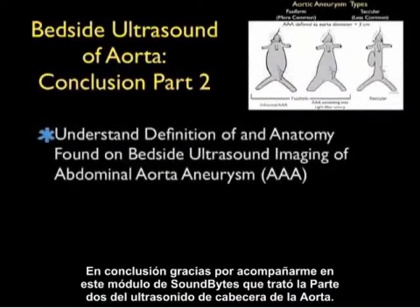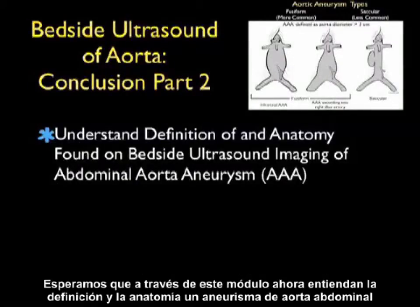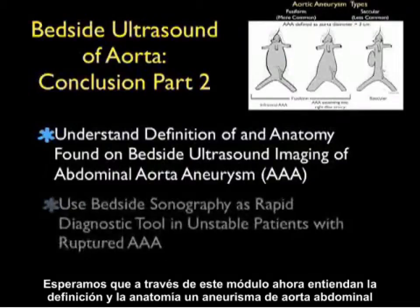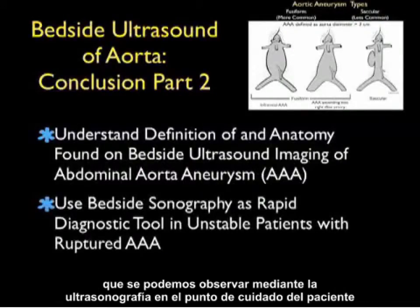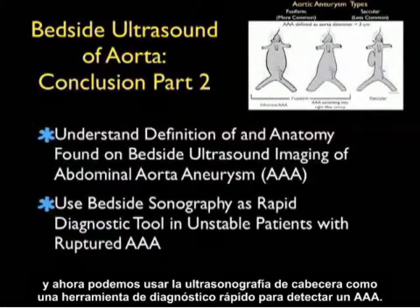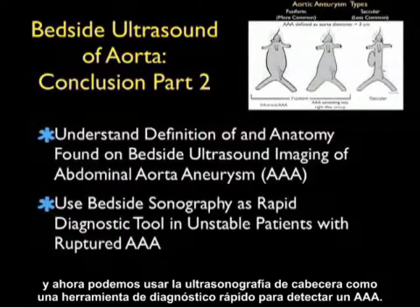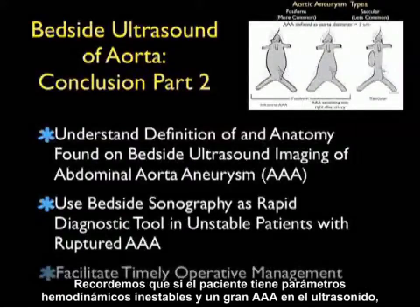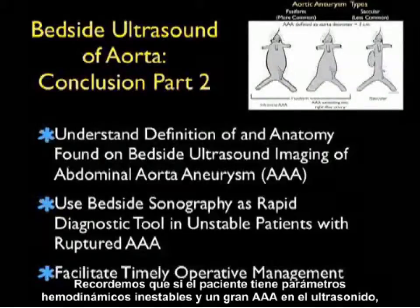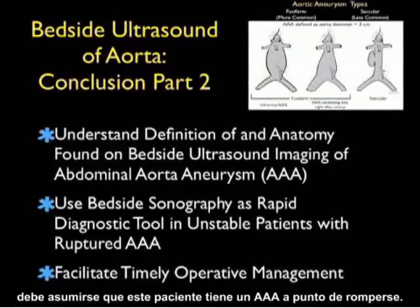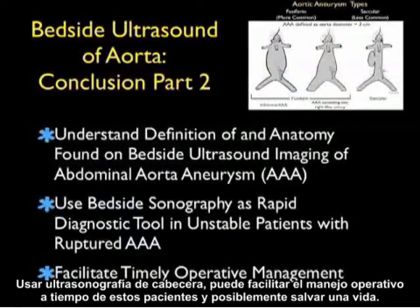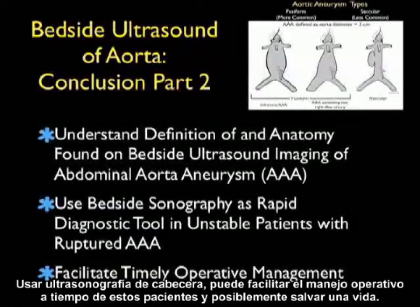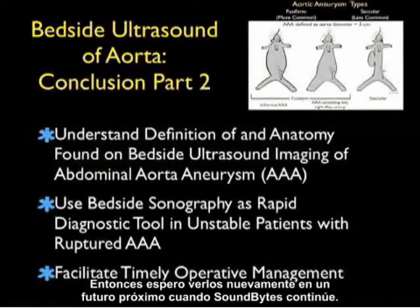In conclusion, thanks for joining this SoundBytes module covering Part 2 of bedside ultrasound of the aorta. You should now understand the definition and anatomy found on bedside ultrasound imaging of an AAA, and can use bedside sonography as a rapid diagnostic tool for detecting a AAA. Remember: if the patient has unstable hemodynamics and a large AAA is seen, that patient must be assumed to have a rupturing AAA. Bedside sonography facilitates timely operative management and can save a life.